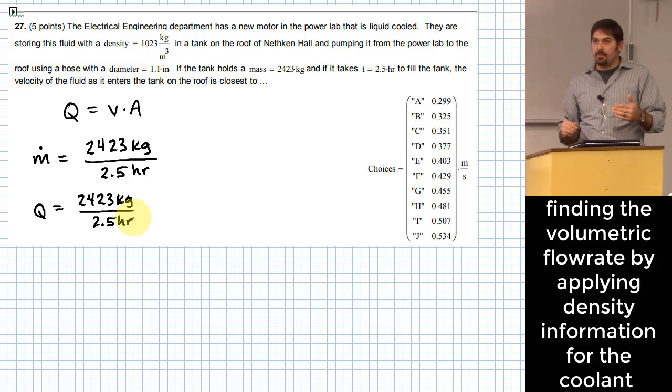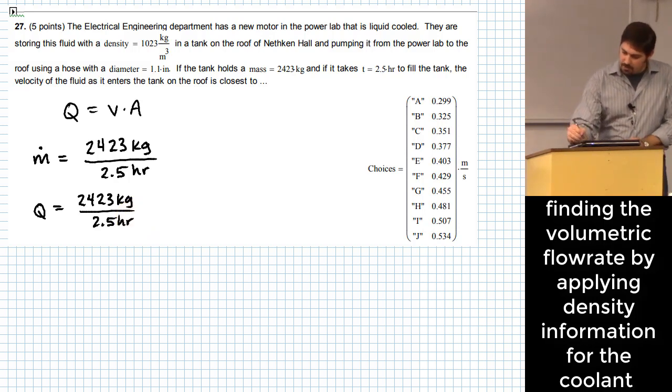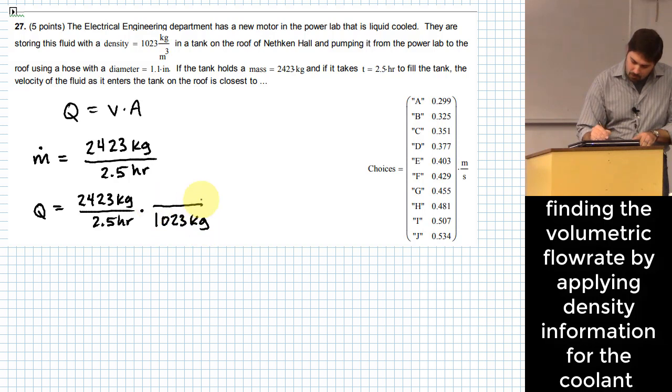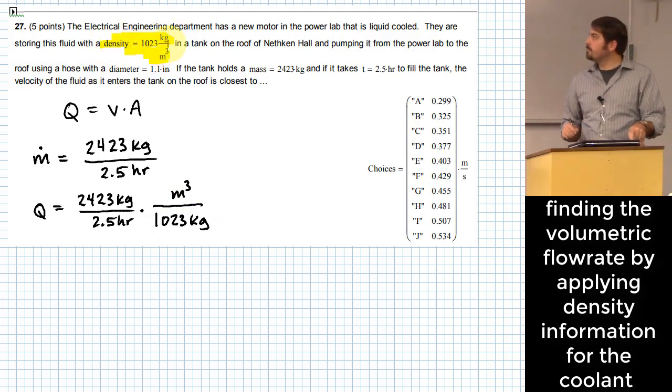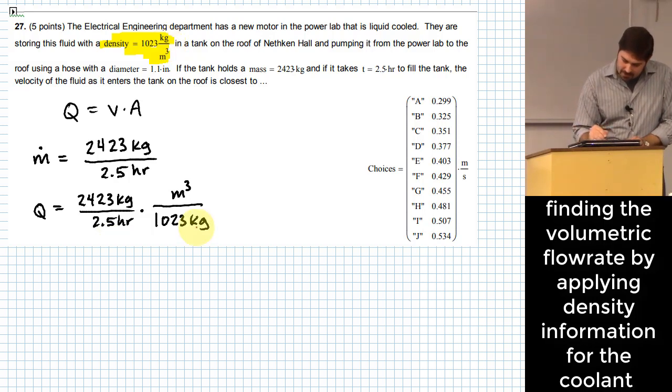So if I want to change that into a volumetric flow rate Q, how do I eliminate mass and get volume instead? Density is equal to mass over volume, right? If you have a density value, that gives you mass per volume. In this case though, we want to get rid of mass and get volume. How about if I multiply this by 1,023 kilograms per cubic meter? Because it tells us right here that's the density of this fluid. That should give me my volumetric flow rate. Notice there what happens is your kilograms cancel out and you end up with cubic meters per hour.